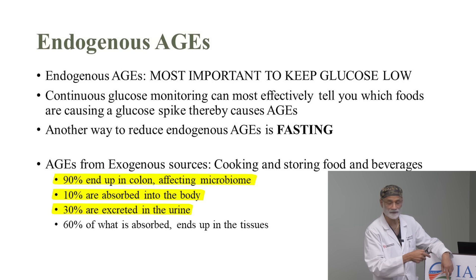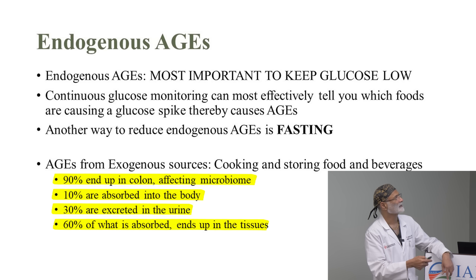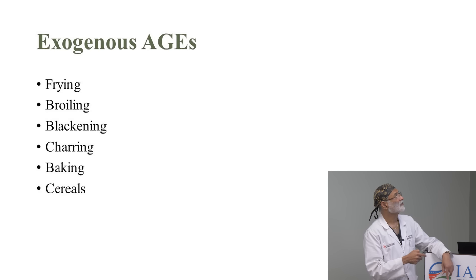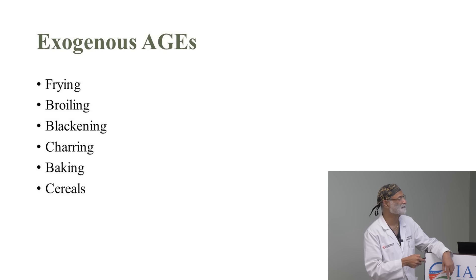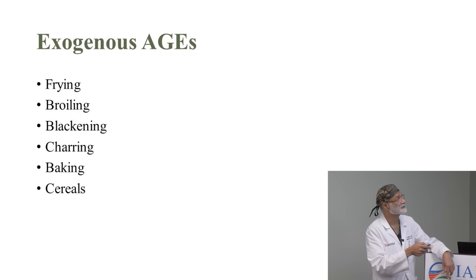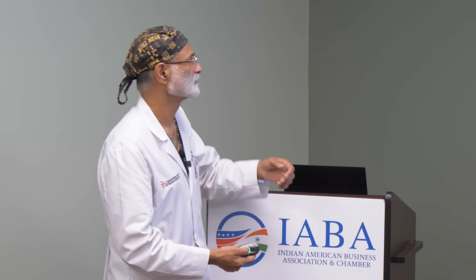How do you produce exogenous AGEs? You're frying, broiling, blackening, charring, baking, and eating cereals — all these generate advanced glycation end products. Just think about it: you're taking the food and destroying it. Humans were not supposed to do these things. These cooking activities were not part of original human activity.